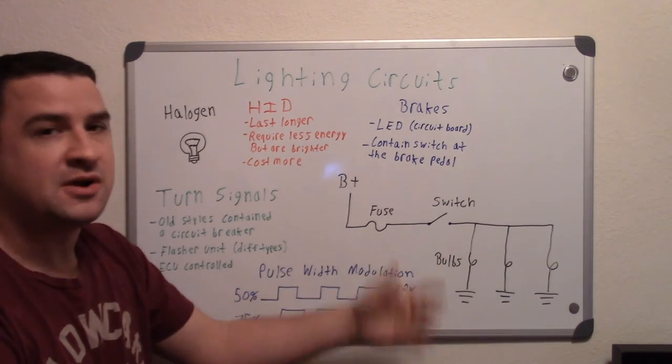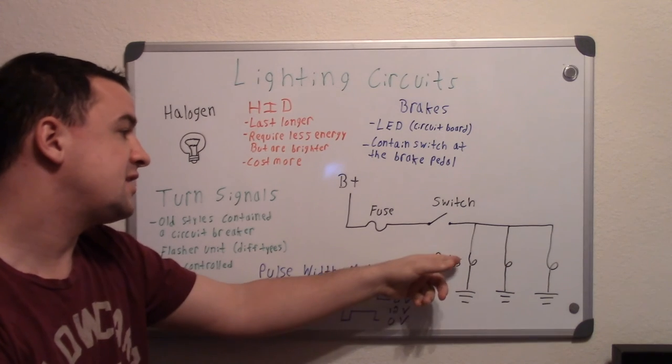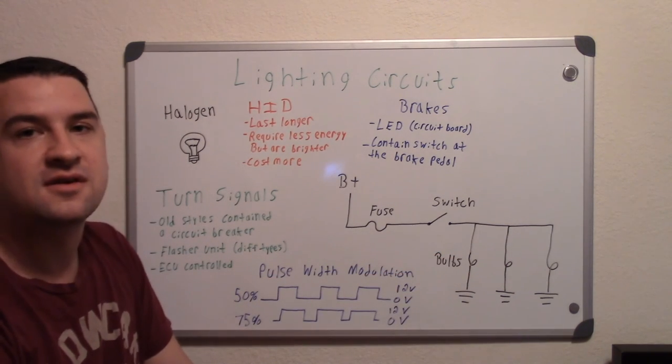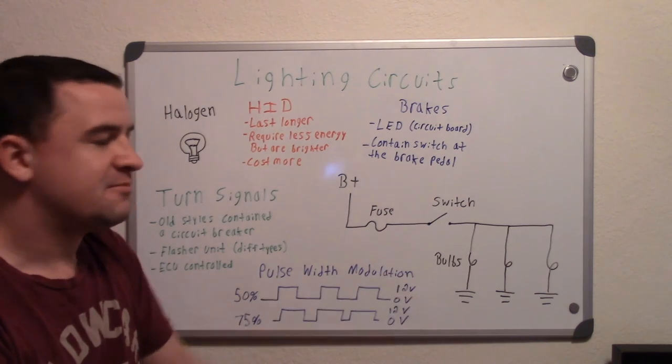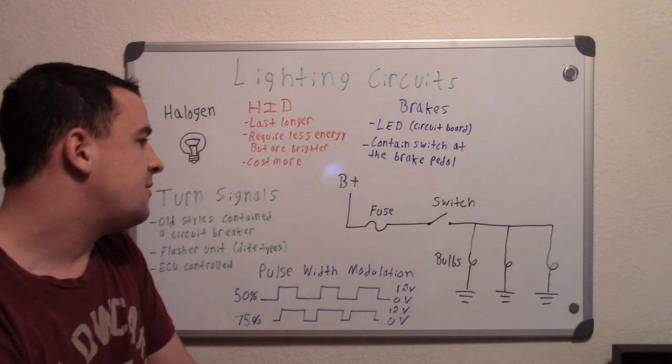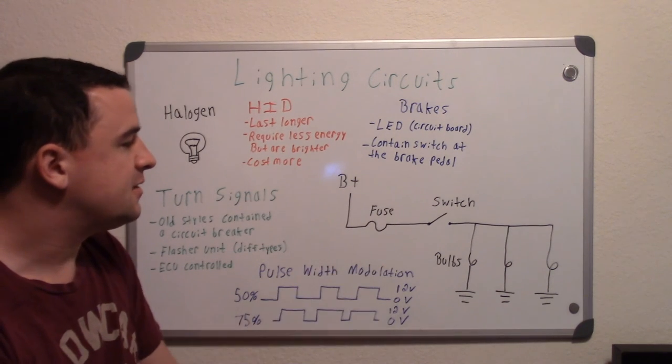That's why they're in parallel circuits so that if one bulb goes out, the other ones will work. So if you had essentially all your brake lights being lined up in series, if one goes out, then they all go out. And so that's why most of them are lined up in parallel.